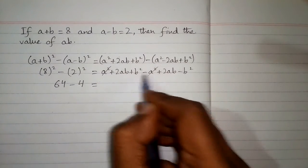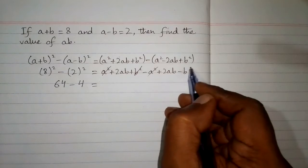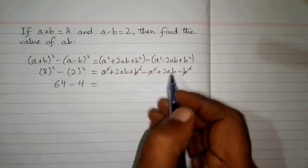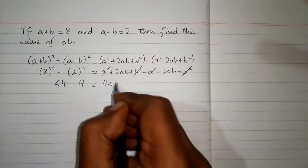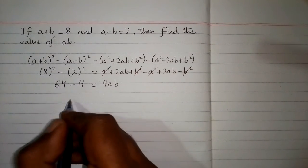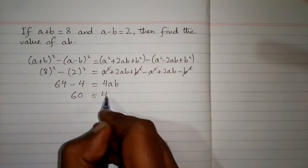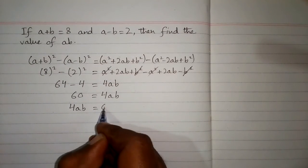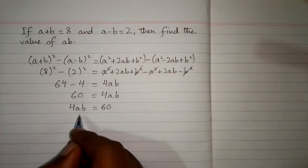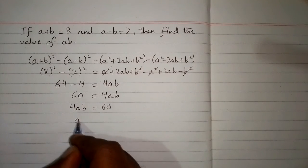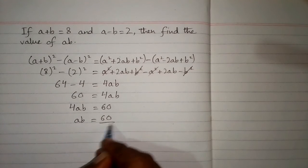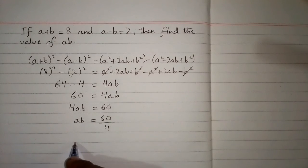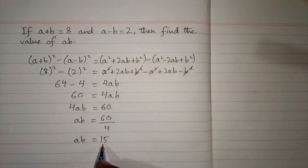a squared minus a squared cancels, and b squared minus b squared also cancels. So 2ab plus 2ab equals 4ab. Then 64 minus 4 is 60, so 60 equals 4ab. Dividing both sides by 4, we get ab equals 60 upon 4, which is 15. So the value of ab is 15, and this is the required answer.